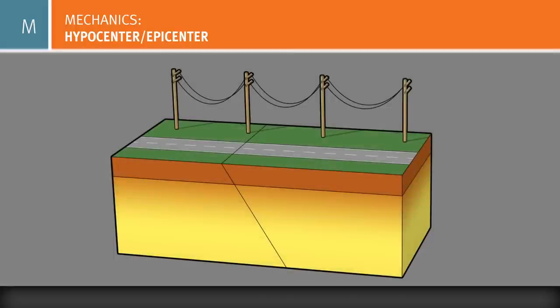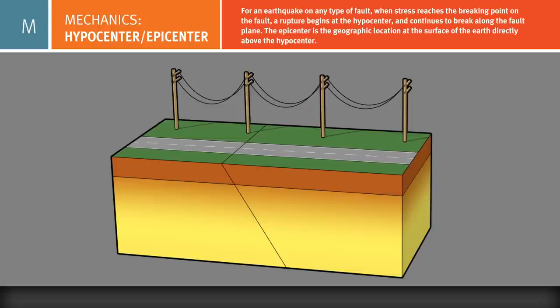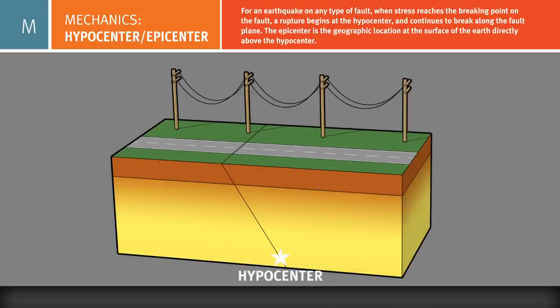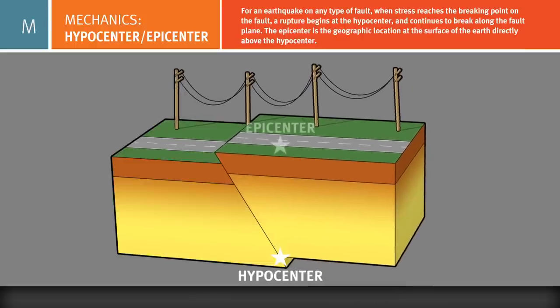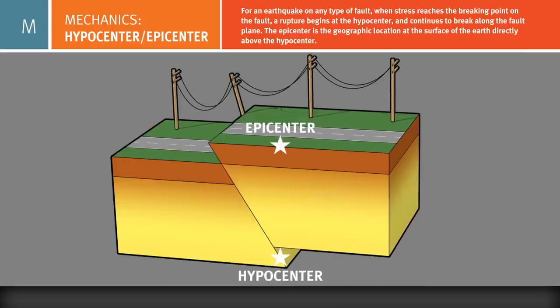Earthquakes on any type of fault follow a similar pattern. When the stress reaches the breaking point on a fault, a rupture begins at the hypocenter and continues to break along the fault surface. The epicenter is the geographic location at the surface of the Earth, directly above the hypocenter.